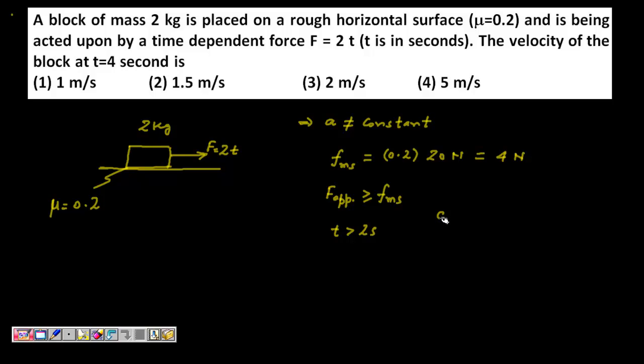And when the object moves, what will be the object's acceleration? The object's acceleration is net force divided by the mass of the object. This is the second important step which students miss. So the net force here will be 2T means the applied force, which is time dependent, minus 4, because mu s and mu k distinction is not given, so we are taking them as same. This force of friction will act in this direction. So the net force on this object after T is greater than 2 seconds will be this much, divided by mass. So the acceleration as a time function will be T minus 2.